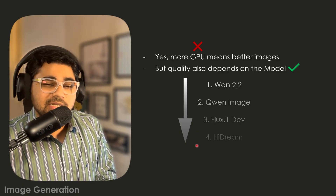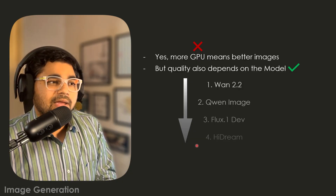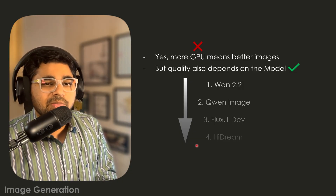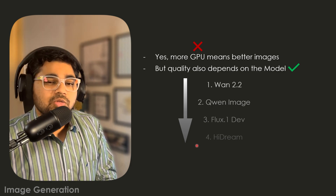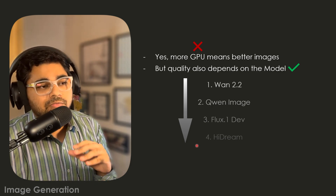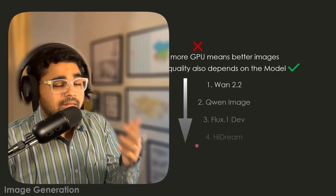This is only for image generation. For video generation, the simple answer is: the more GPU, the better output, because with images we can upscale, inpaint, and tweak, but for video generation we don't have that much flexibility yet. So the question I started with — does a high-end GPU give you better image quality — the simple answer is yes, but the detailed answer is it depends on the model. I hope you liked this comparison of four models for quantized versus full versions. Like, share, subscribe, and I'll see you in the next one!